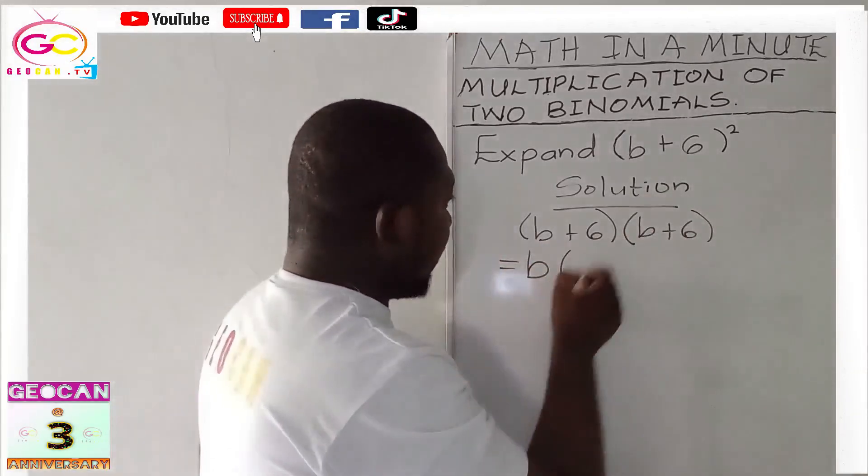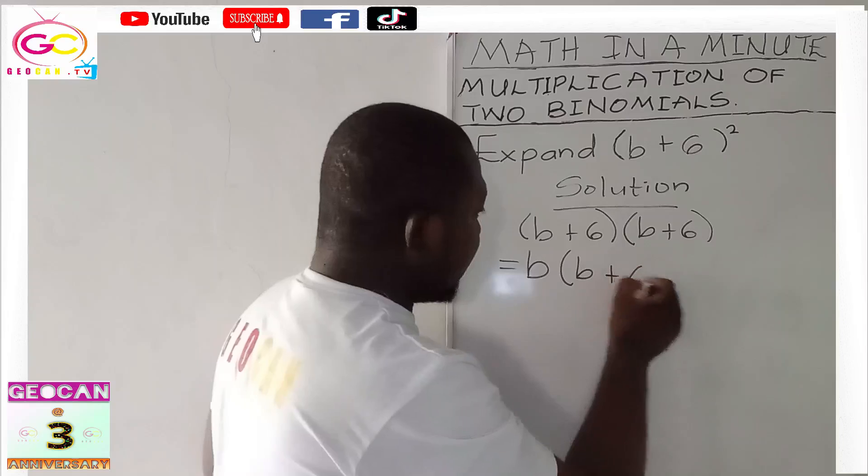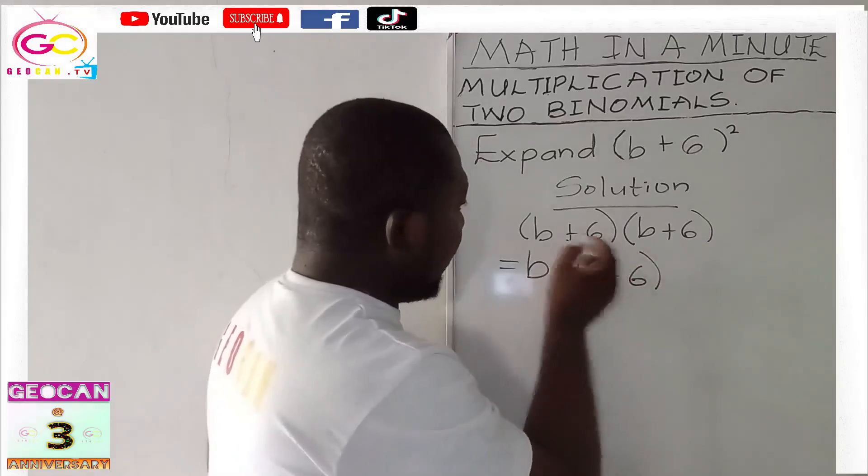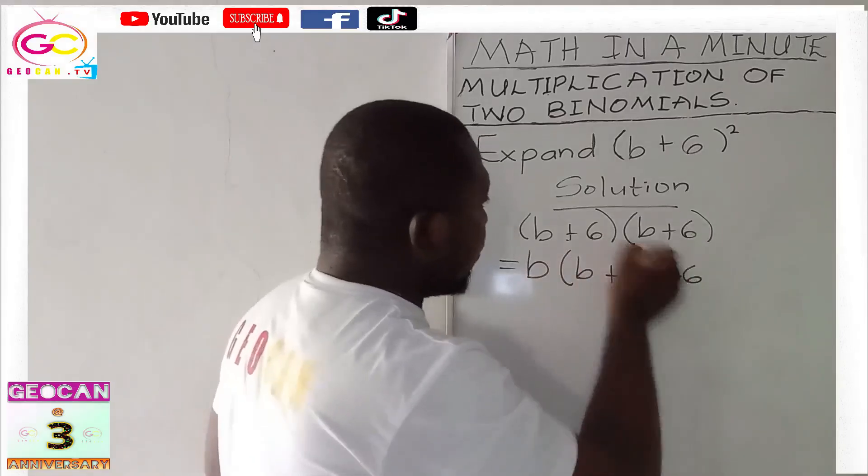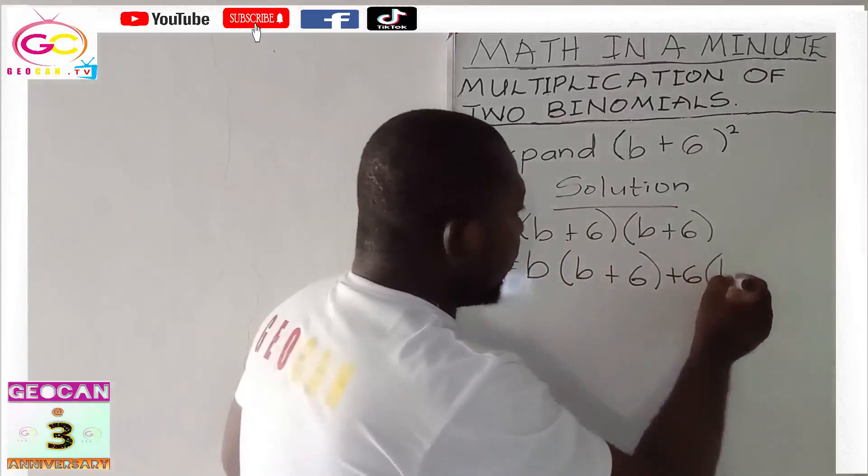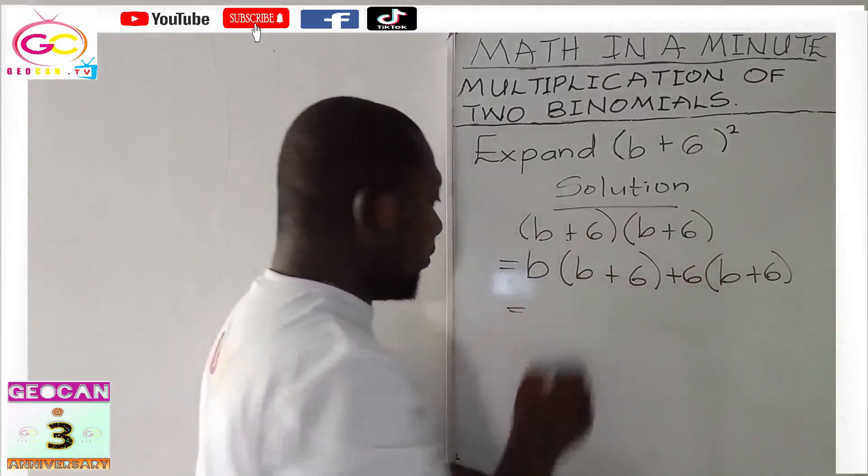So b into (b+6). Now, we have plus 6, so plus 6 will also multiply (b+6).